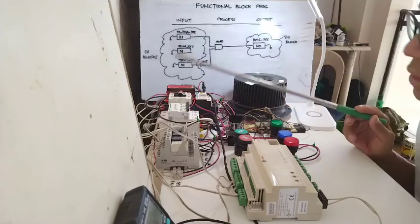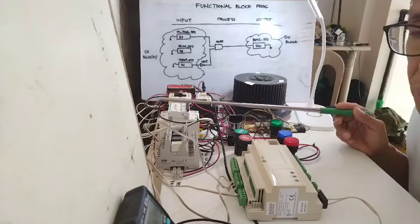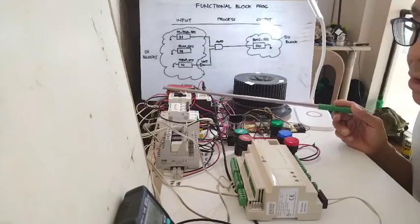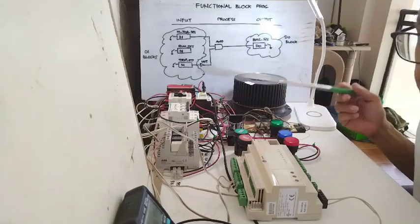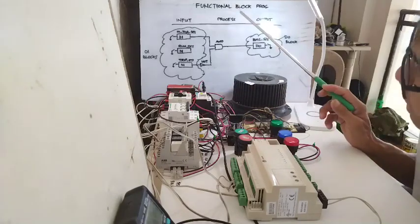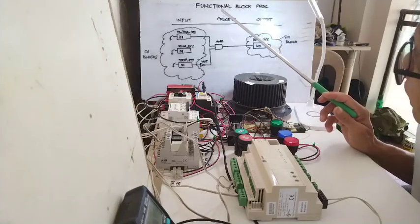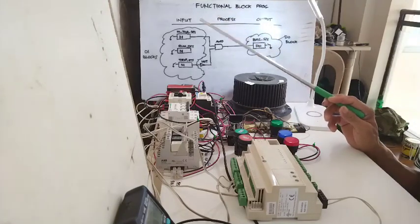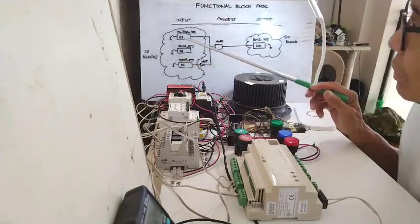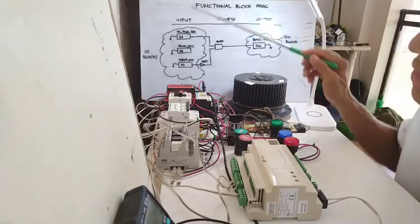From that tutorial, we learned that we need to provide some information to our direct digital controller, or our PLC. Some information that our program will use to decide if it will start the control panel. In simple data or information processing, we have the input, process, then output. So we need some inputs, then we do some processing, and based on that processing it will produce the necessary output.